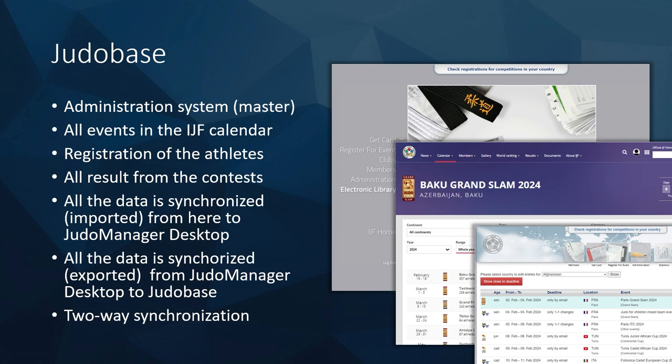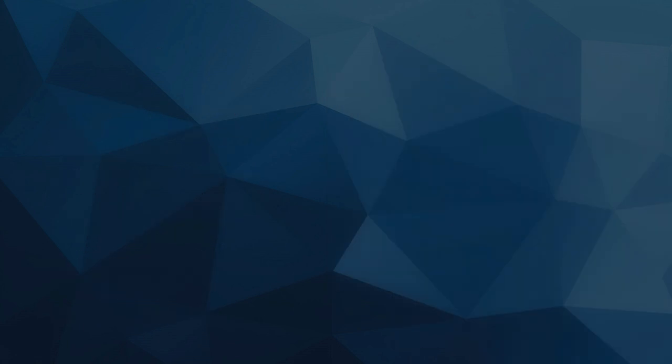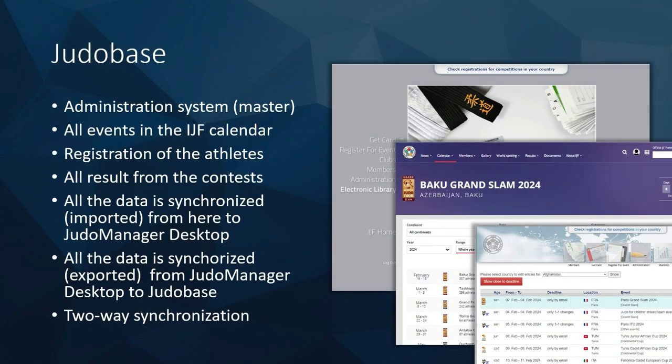When you select a competition and refresh data, you get the data from this system, and when you synchronize you send all data online to this system. The data in Judo Base can be seen on the IJF.org site, on JudoTV, and on other connected sites.